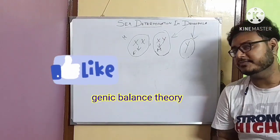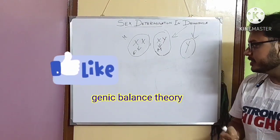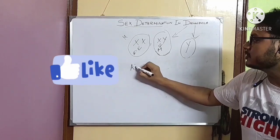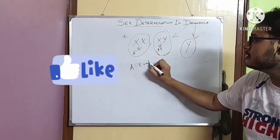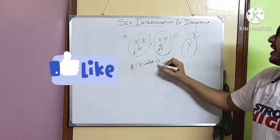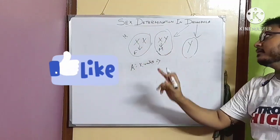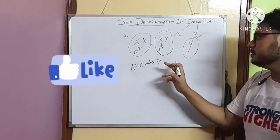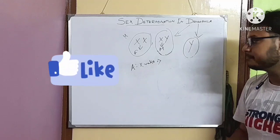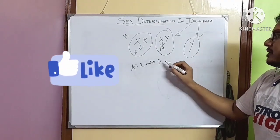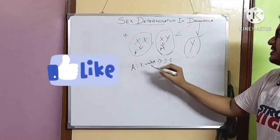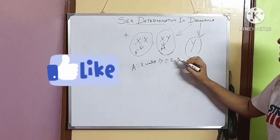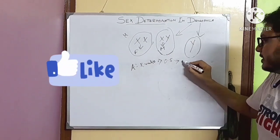Now, from the genic balance theory, we get that autosome to X chromosome ratio determines the fate of the fruit fly or Drosophila sex. If this ratio is 0.5, then the fly is male.